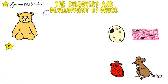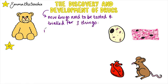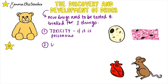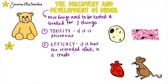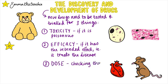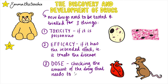New medical drugs have to be tested and trialled before being used to check three things: toxicity — checking if it's poisonous; efficacy — meaning it has the intended effect and treats the disease; and dosage — checking the amount of drug that needs to be taken to work best. You can remember these with the acronym TED.